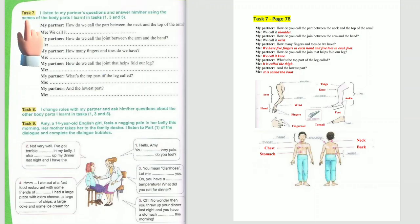Task 7. I listen to my partner's questions and answer him or her using the names of the body parts I learned in Tasks 1, 3 and 5.